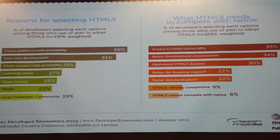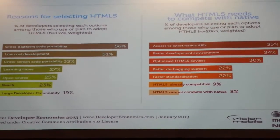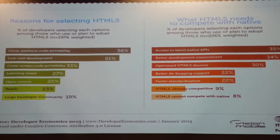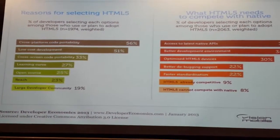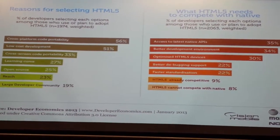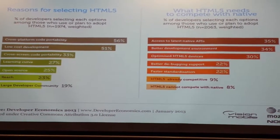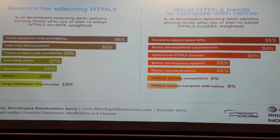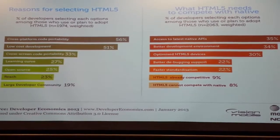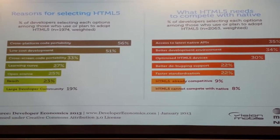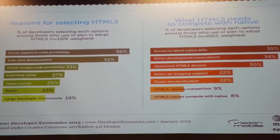When we look at why developers choose HTML5, a lot of them are what you'd expect: cross-platform code portability, lower cost for development since you don't need the full native environment, cross-screen portability targeting tablets, desktops, and mobile all at once, a lesser learning curve, open source, and more GitHub repositories. On the side of what HTML5 still needed: access to the latest native APIs, since platforms like PhoneGap are always a bit behind hitting the lowest common denominator; better development environments; optimized HTML5 devices, which is hit and miss across the industry; better debugging support; and faster standardization.